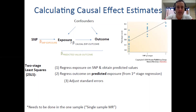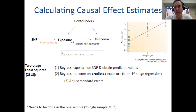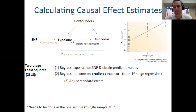The third step we need to do is adjust the standard errors for the second stage regression. This is because we're using predicted values rather than real values in the second stage regression. But we don't have to worry about this in practice because software will automatically do that for us.